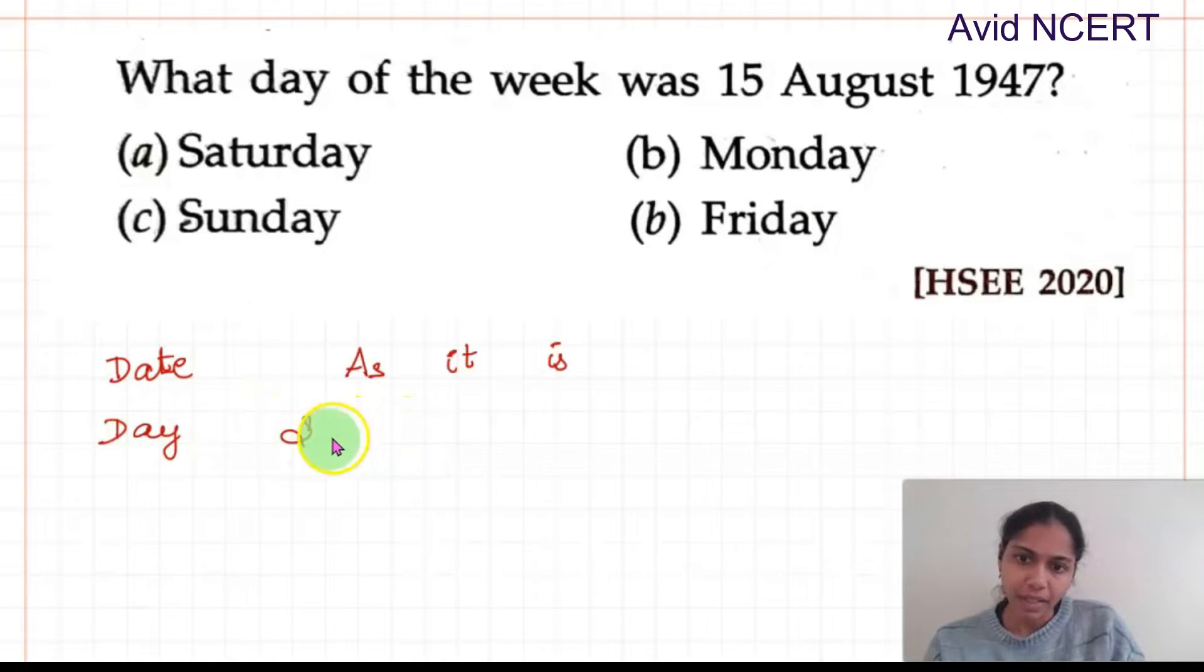Day goes like this. Sunday, Monday, Tuesday, Wednesday, Thursday, Friday and Saturday. So the code is 1, 2, 3, 4, 5, 6, 7 or 0.